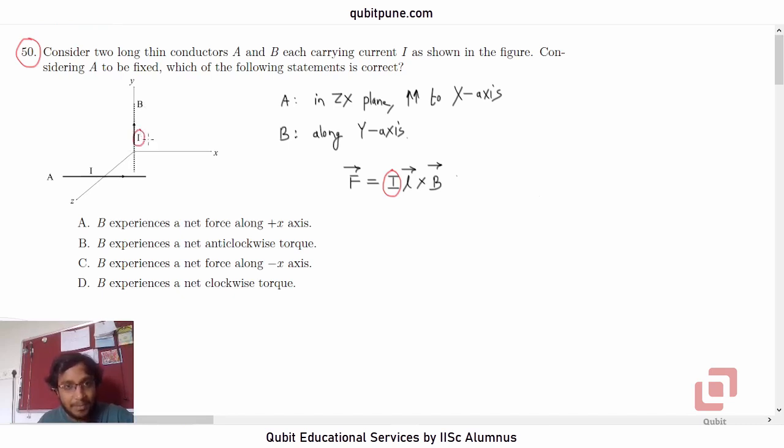L bar is going to be a length vector along the current of the conductor B. And what about B bar? B bar is not the magnetic field that will be created due to conductor B. Yes, it will create its own magnetic field. But that magnetic field will not be exerting any force on B itself. In fact, it will be exerting forces on A, but we are not interested in that.